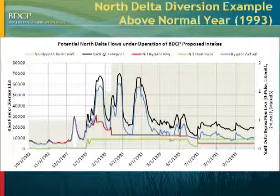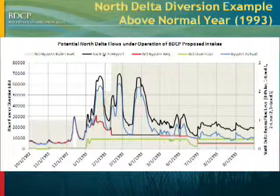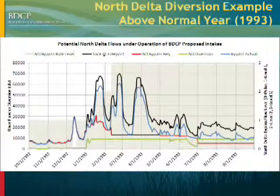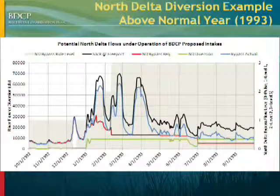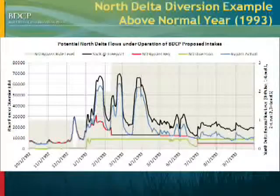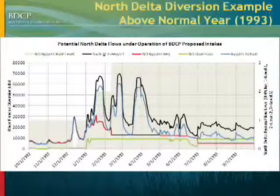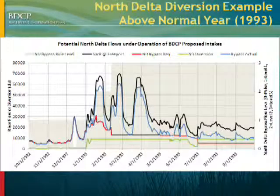Here is another example — an abnormal year where we have sustained high flows in the system. We have the initial pulse protection in December where the only diversion is the constant low-level pumping. Once we go through that and the post-pulse operations start, we quickly move up to the 9,000 CFS diversion, and the diversion is sustained through most of the season mainly because there are sustained high flows in the river. That's basically how the bypass flow requirements are working.